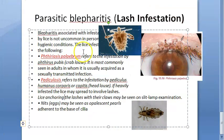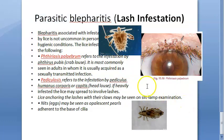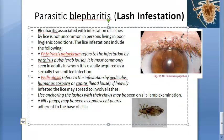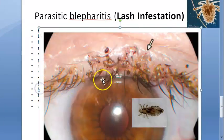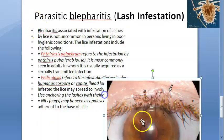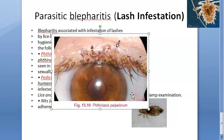So in parasitic blepharitis and lash infestation, the causes include Phthiriasis palpebrarum and Pediculosis. Looking at clinical features from the textbook: this person will have chronic blepharitis and chronic follicular conjunctivitis.